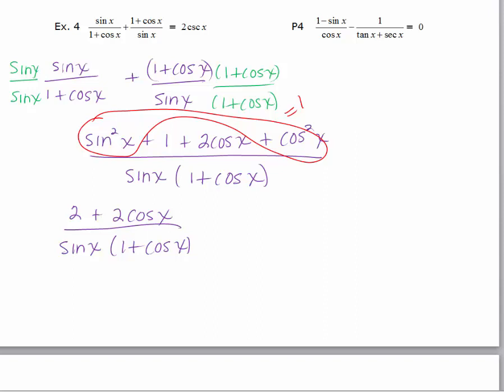And if you remember in a prior video, I mentioned that you shouldn't distribute until after you see if you can cancel some common factors. And I can see that there's a common factor of 2 in the numerator that I can factor out, so I'm going to do that. So factoring out the 2, I get 2 times 1 plus cosine x over sine x times 1 plus cosine x.